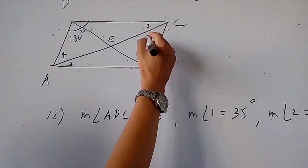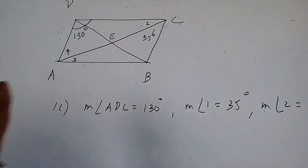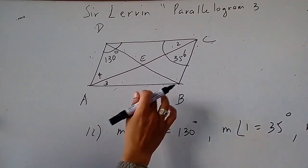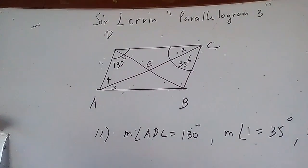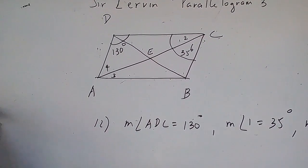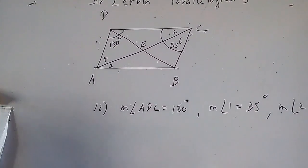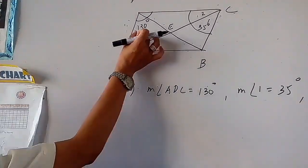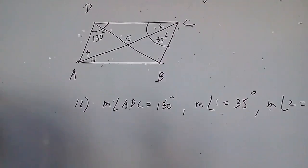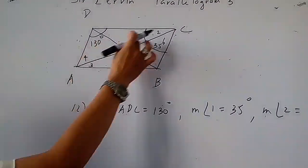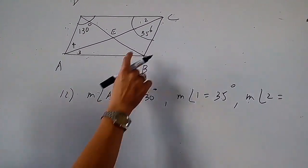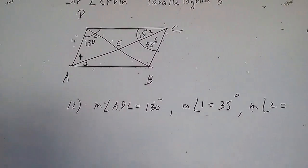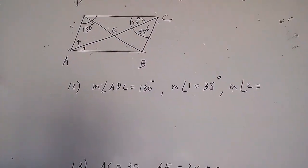The measurement of angle 1 is what we need to find. You have to remember that angle ADC and angle BCD are consecutive angles, and therefore one of the properties of the parallelogram is that they are supplementary — their sum is 180 degrees. So if angle ADC is 130 degrees, angle BCD will be 50 degrees. Since angle 1 is 35 degrees, angle 2 is equal to 15 degrees.